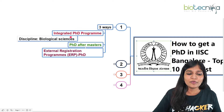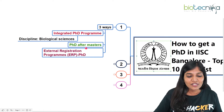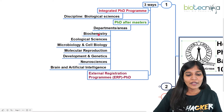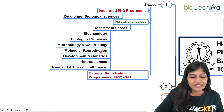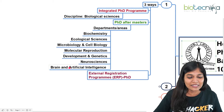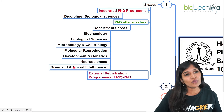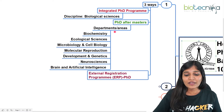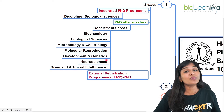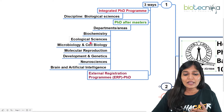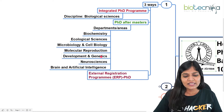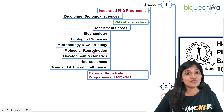For the Integrated PhD program, you can join Biological Sciences. For PhD after master's, there are different departments or areas of research you can join: Biochemistry, Ecological Sciences, Microbiology, Molecular Reproduction, Development and Genetics, Neurosciences, and also areas related to Data Sciences, Brain and Artificial Intelligence. Bioinformatics students can also look into this. When applying, you will typically be asked to attend interviews in three departments — commonly Biochemistry, MCB, or Molecular Reproduction and Development and Genetics.